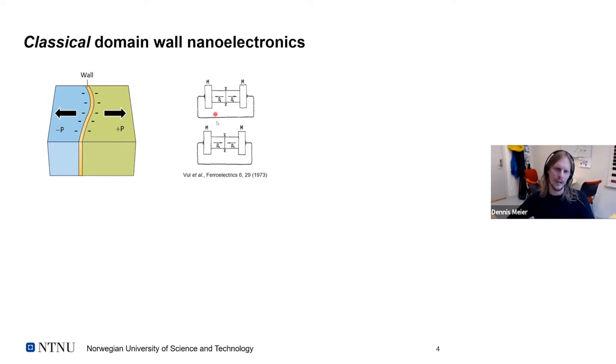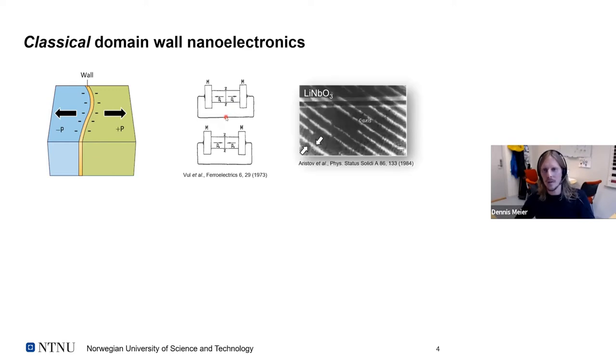This was already recognized early on. First device applications were proposed by Wul et al in 1973, where they thought if we have these highly conducting domain walls, we could control conductivity by writing and erasing the domain walls in between two electrodes. So this was an interesting idea, but at that time, not really accessible. Much later, it then became possible to also visualize these electronic properties at the domain walls. Here's an early example where people recognized in SEM that the electronic composition or performance of these domain walls, head-to-head walls in this case, is different compared to the domains on the left and on the right.